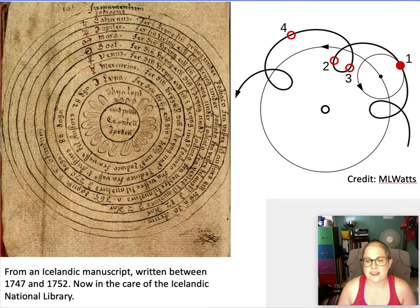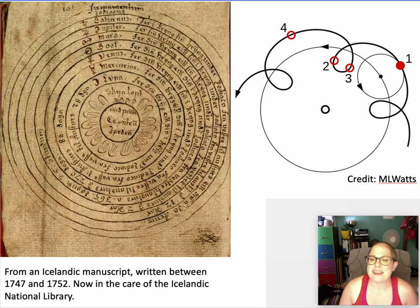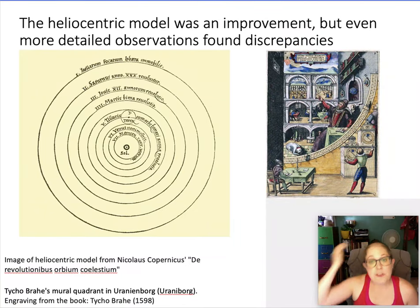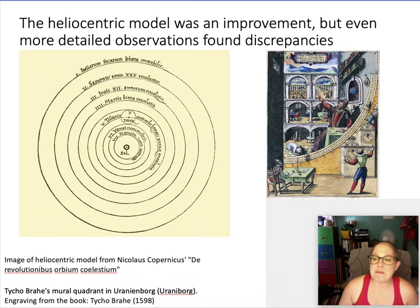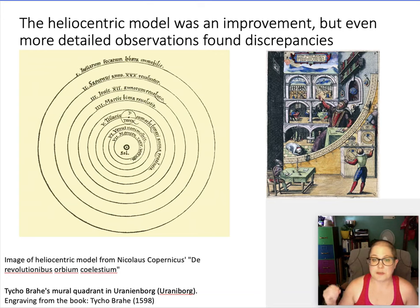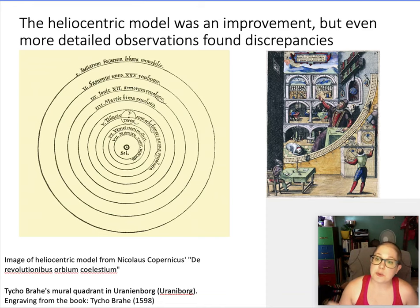Where we left off, geocentric models had Earth in the center with all the planets, the sun, and the moon going around. This doesn't account for the retrograde motion of planets very well — you have to add little loop-de-loops to make that make sense. The heliocentric model, putting the sun at the center of the solar system, makes retrograde motion a more obvious, natural phenomenon, and was a vast improvement in predicting where the planets would be at any given time. However, more detailed observations were still finding discrepancies between what the Copernican heliocentric model calculated and what was actually observed.